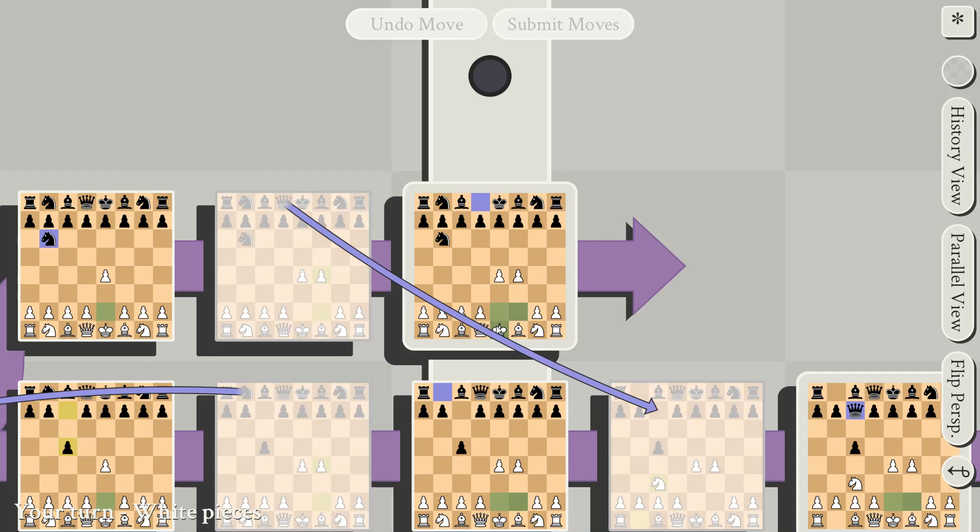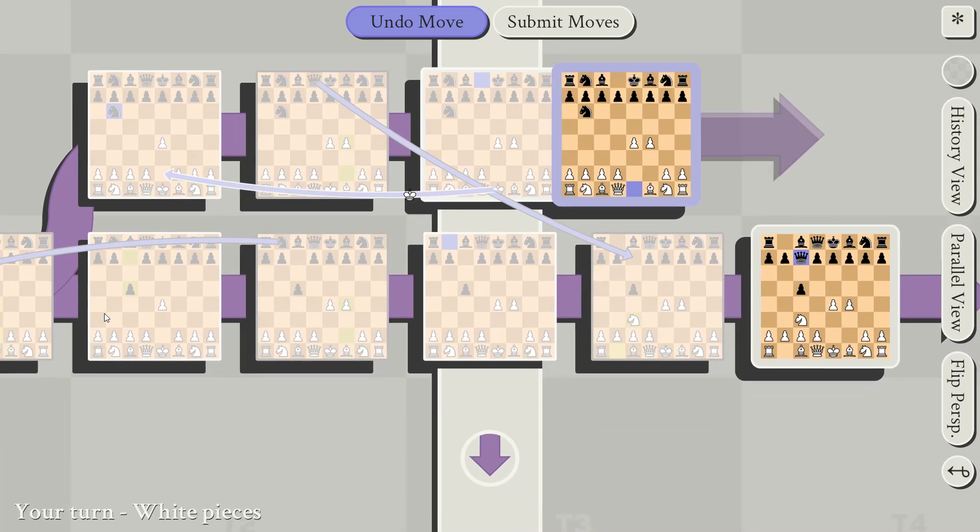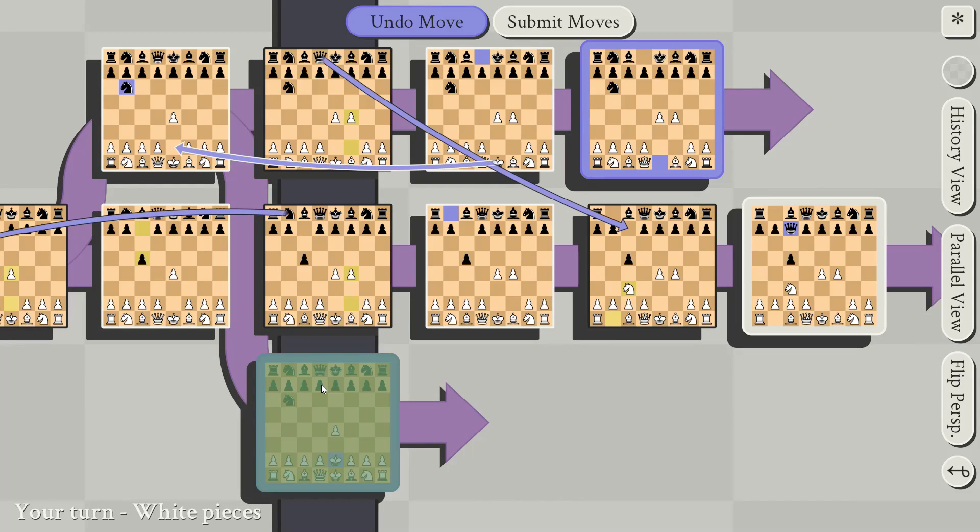Now as white, I'm going to move my king back one turn, and up one, into the past, and then a new timeline gets created.